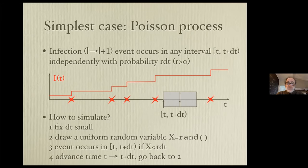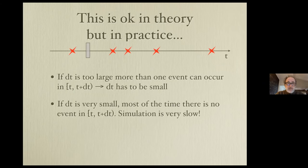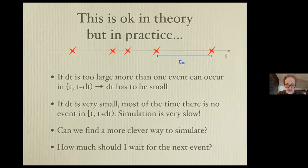The challenge in choosing dt is that if it's too large, more than one individual may get infected in a single interval; but if dt is very small, the simulation becomes very slow. Can we find a smarter way to simulate this process? The idea is to ask: given an event at time t, how long do we wait for the next event?